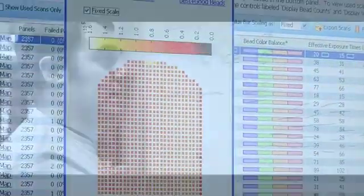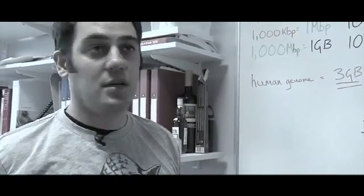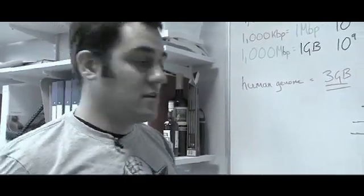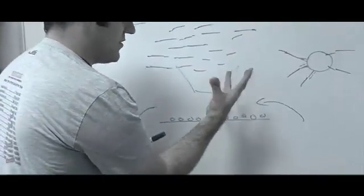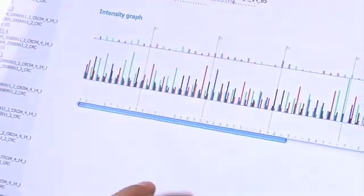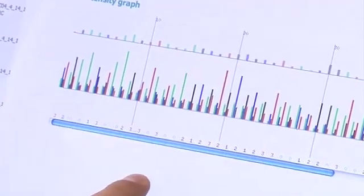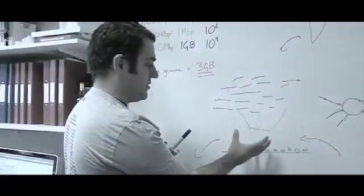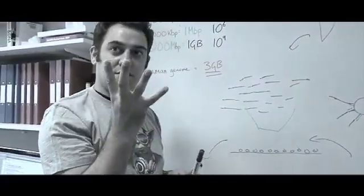So for example, A might be red and C might be blue and T might be green. So as you wash over, each of these beads fluoresces according to the color of the base that's added. Now because the beads only have one piece of DNA on, the color is always the same. And the camera basically focuses on the beads and takes a picture as the chemistry goes over.